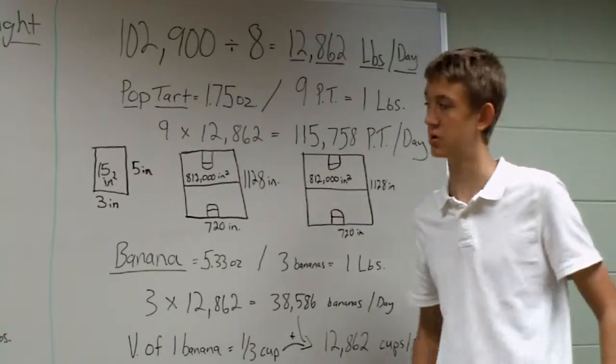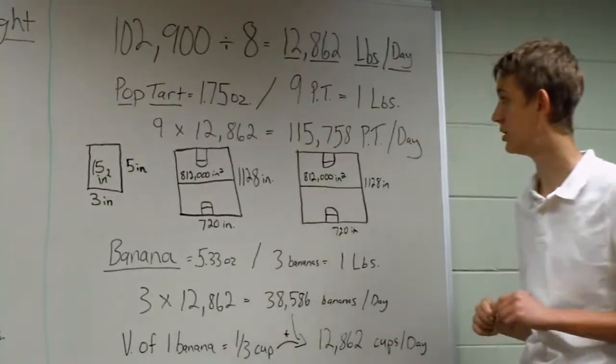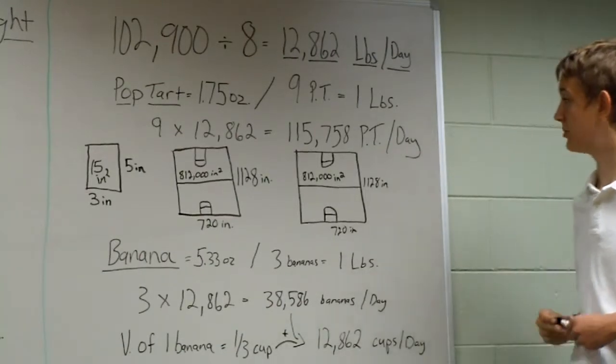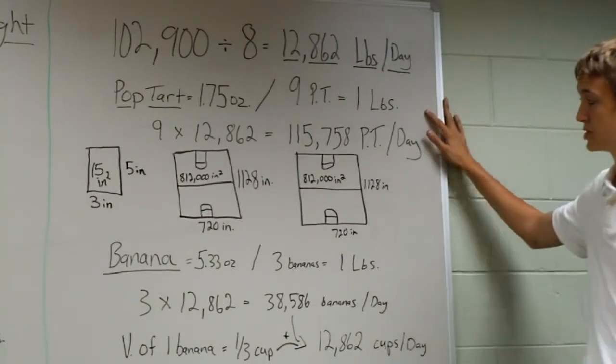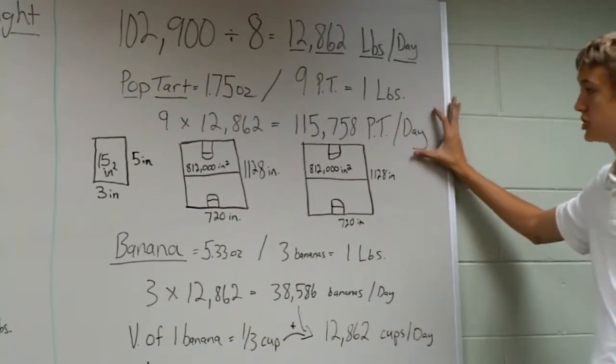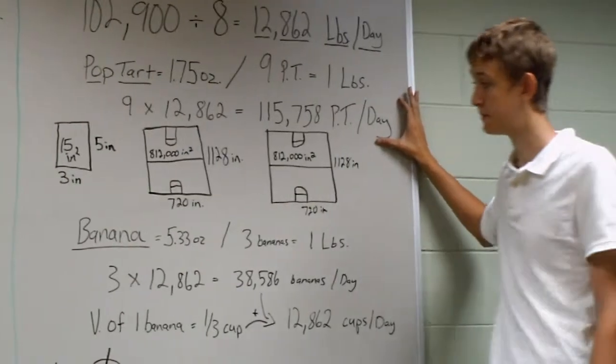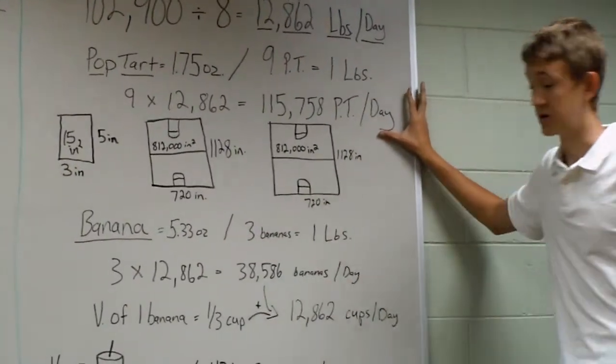Now let's start with a breakfast snack. A Pop-Tart is about 1.75 ounces, or nine Pop-Tarts in one pound. So you take those nine Pop-Tarts multiplied by the pounds per day, and you get 115,758 Pop-Tarts a day. That's a lot of Pop-Tarts.